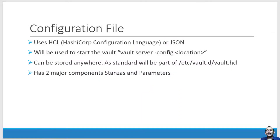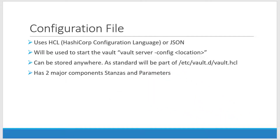Let us understand how to use the configuration file and its purpose. Till now we were starting the HashiCorp Vault server in the developer mode, so automatically it gets started in the unsealed state and we were not forced to do any special operation to start working with the secret engine. In a production scenario, there are a lot more configurations and information that need to be provided to the server before getting started.